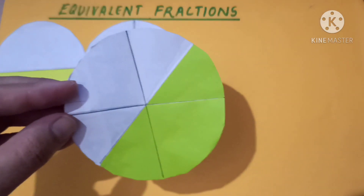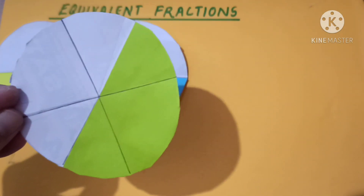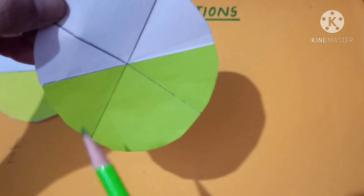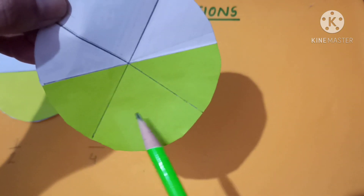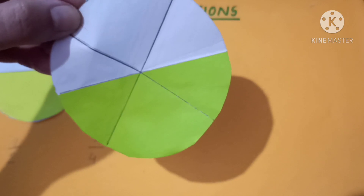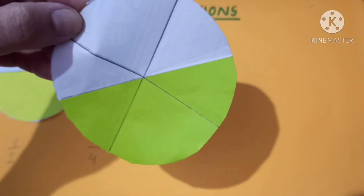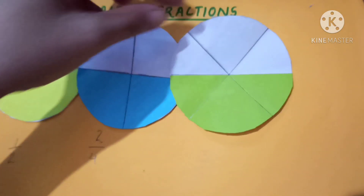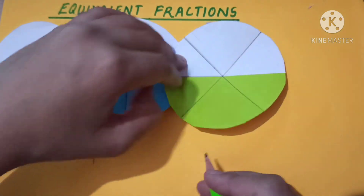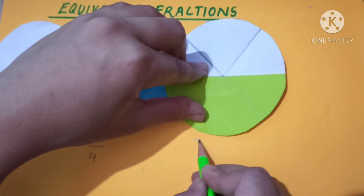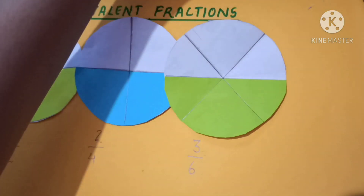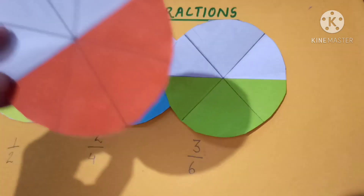See the next one. This is again a circle. The circle is divided into six equal parts, and out of six equal parts, three are green. So the fraction of the shaded or the green part is three upon six.